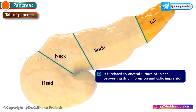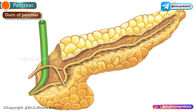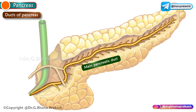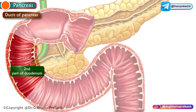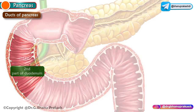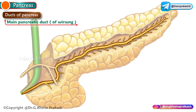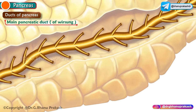The pancreas has two ducts: the main pancreatic duct and the accessory pancreatic duct, both of which drain exocrine secretions into the second part of the duodenum. The main pancreatic duct, also called the duct of Wirsung, begins in the tail and travels along the whole length of the gland near its posterior surface. It is approximately 3 mm in diameter and receives small tributaries at acute angles throughout its length.